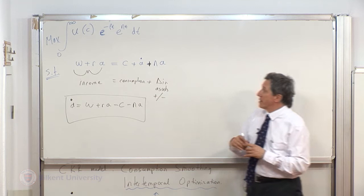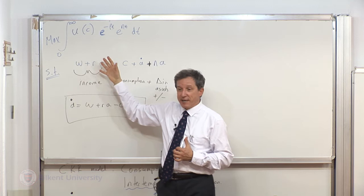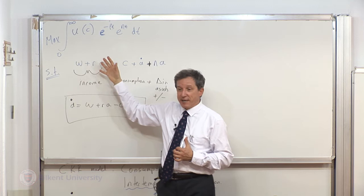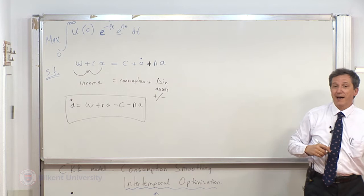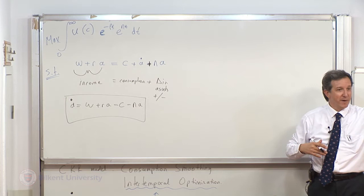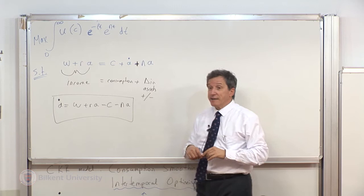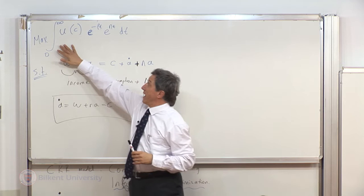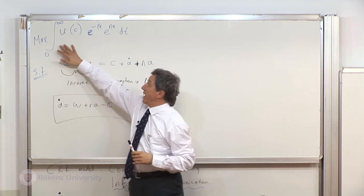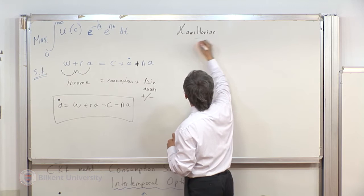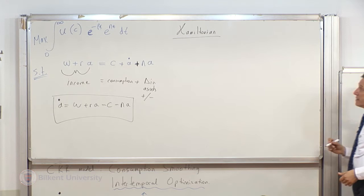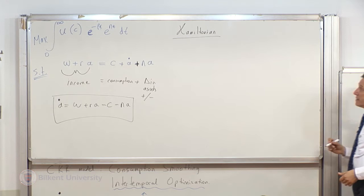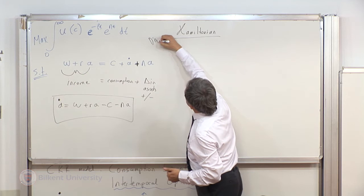Now this is a simple optimization under a constraint — the constrained maximization that you solved for a consumer maximizing utility of two goods with income, using a Lagrangian framework. The Lagrangian framework operates under a constant setting where everything happens at the same time. Here we have an intertemporal decision, so we are going to use a Hamiltonian. And since we have a discounted stream, we will use a discounted version of the Hamiltonian.